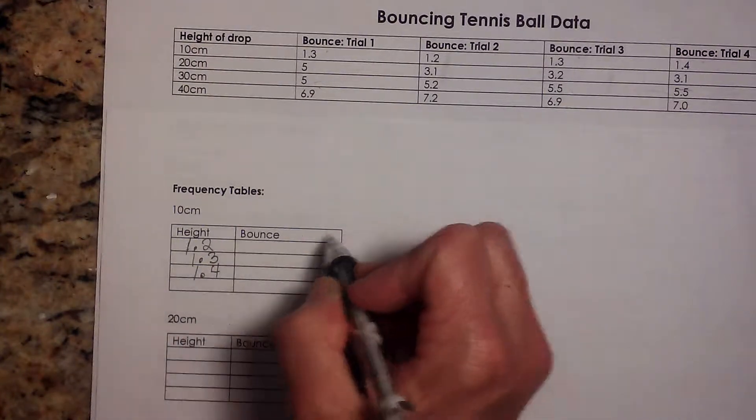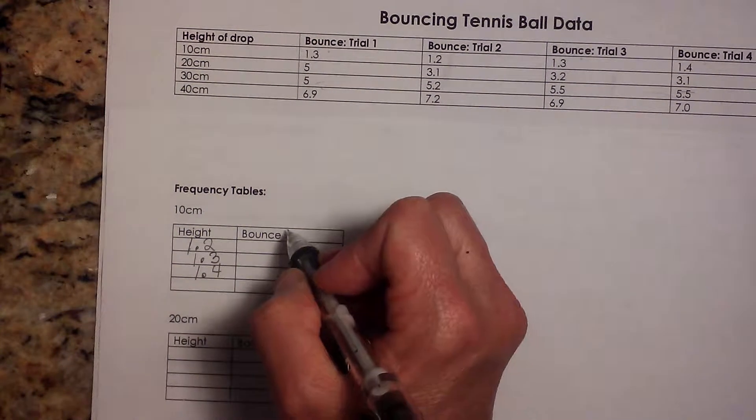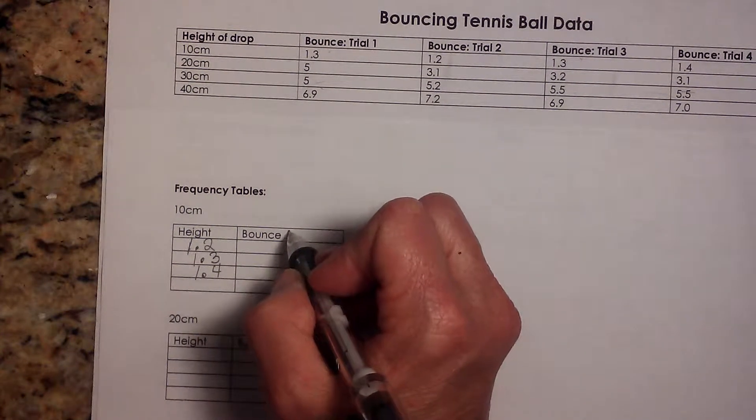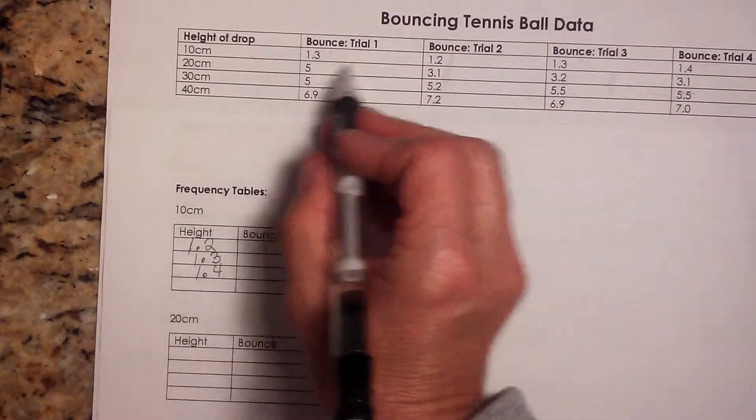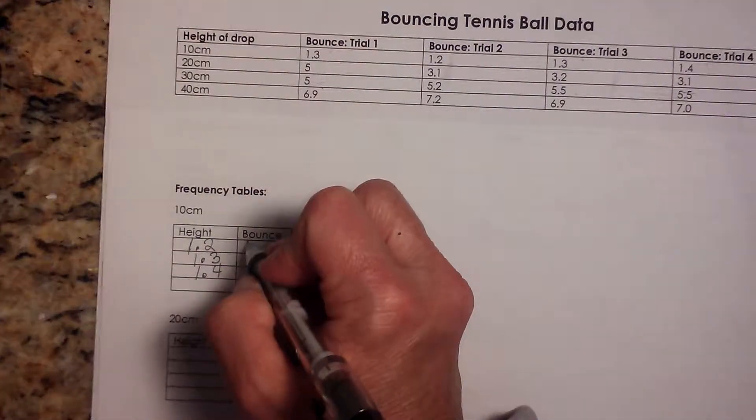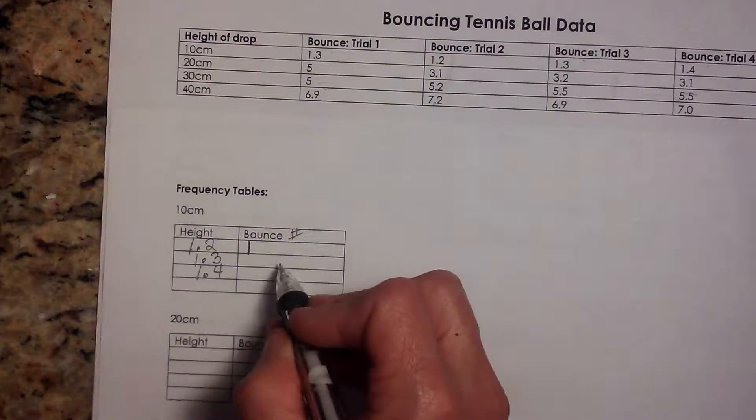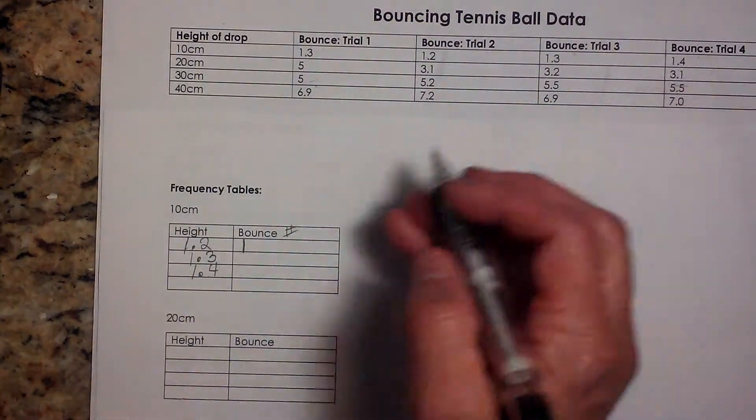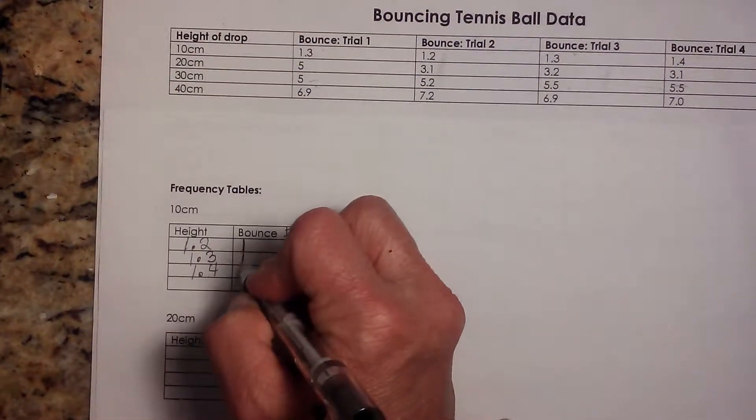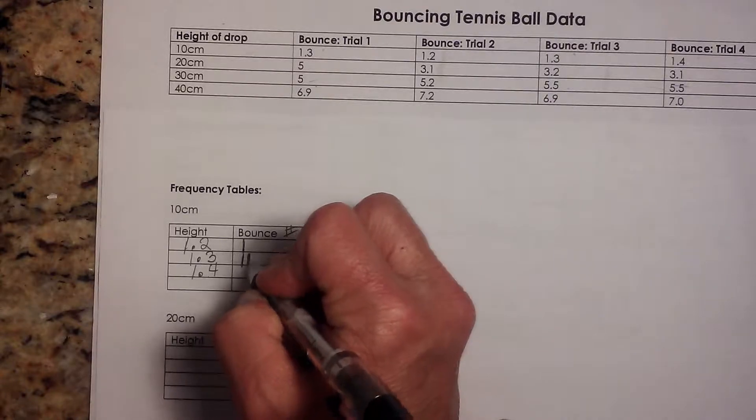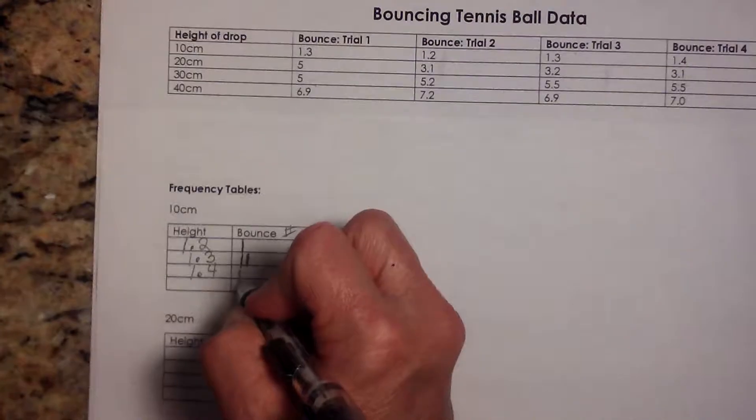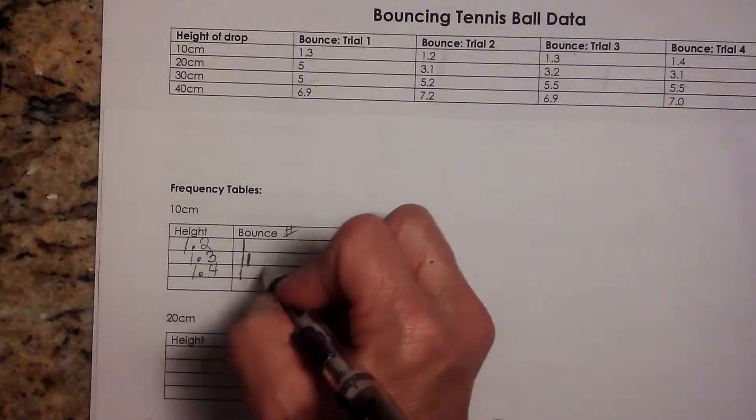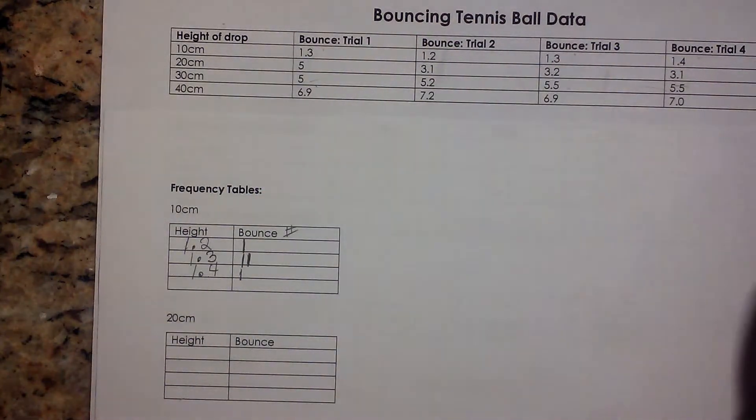Now over here on the right, I'm going to make a frequency of the bounces. So this is my frequency number over here. Well, how many times did 1.2 occur? That just occurred once. How many times did 1.3 occur? It occurred twice. So I'm doing it as if it's a tally. So I'm going to get two marks there. And then my 1.4 only occurred once. So these are tally marks.